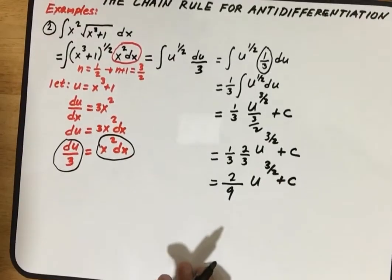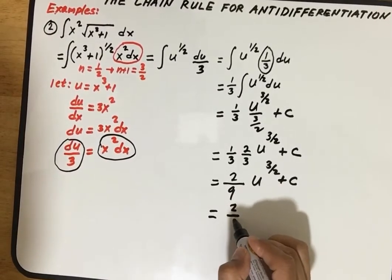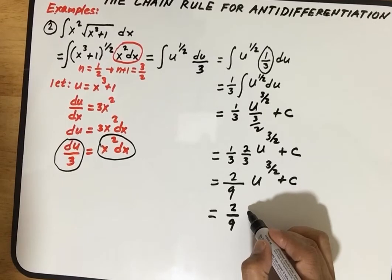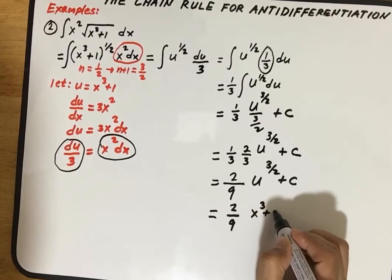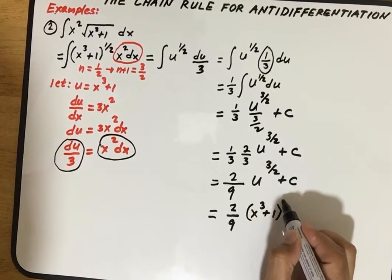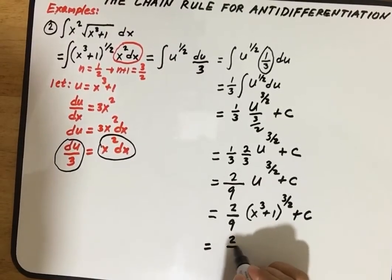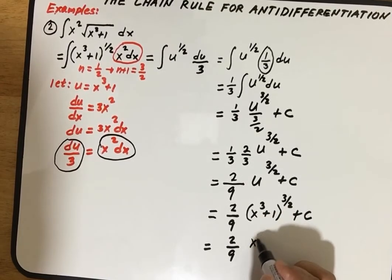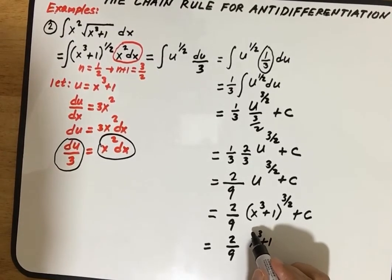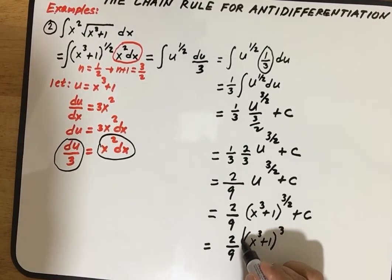We can rewrite this as two over nine times u to the three halves plus c. Since u equals x cube plus 1, this equals two over nine times x cube plus one raised to three halves plus c, which equals two over nine times the square root of x cube plus one to the power three plus c.